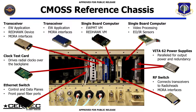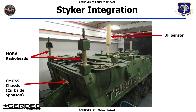Here's a blow-up of the CMOS reference chassis. This has an OpenVPX backplane that you've seen multiple pictures of throughout these sessions. And then obviously things like transceiver boards plugged in, single board computers, VITA 62 power supplies, an ethernet switch, and an RF switch are all integrated into this chassis.